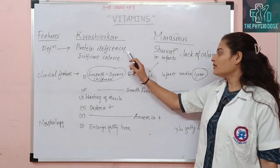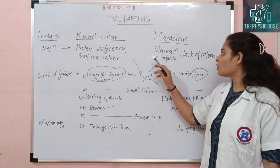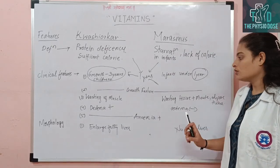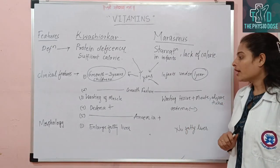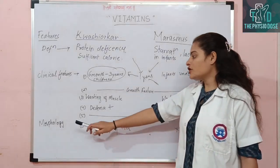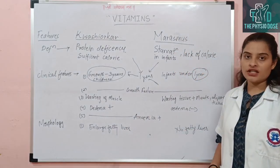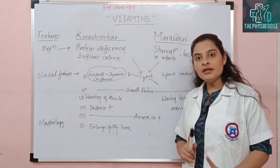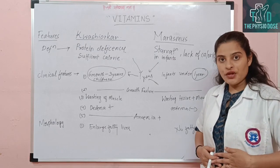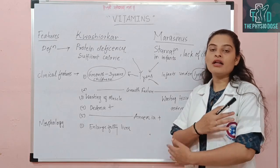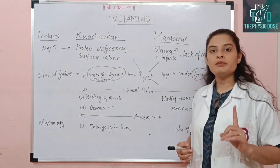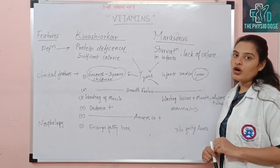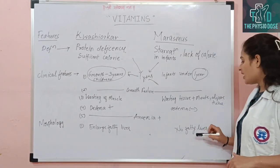Due to the lack of proper nutrition, anemia will be common in both conditions. Looking at morphology features, in Kwashiorkor the fatty liver is enlarged and very prominent. However, in Marasmus the fatty liver is not visible.